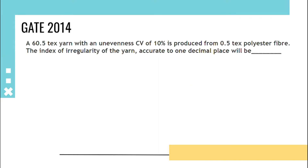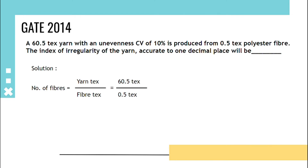A 60.5 tex yarn with an unevenness CV of 10 percent is produced from 0.5 tex polyester fiber. The index of irregularity of the yarn, accurate to one decimal place, is asked. The solution: the number of fibers is yarn tex upon fiber tex. Given that it is 60.5 tex and 0.5 tex polyester fiber, that becomes 121 fibers.